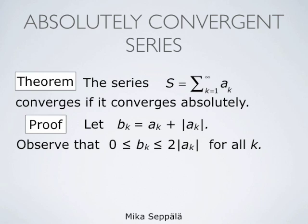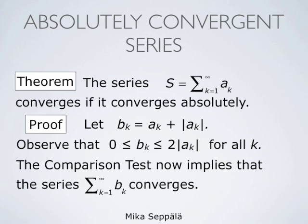We assume that the series s summation k from 1 to infinity of ak converges absolutely. This means that the series formed by the terms absolute value of ak converges in the normal sense. Therefore, the series formed by the terms 2 times the absolute value of ak also converges, and the comparison test implies that the series summation k from 1 to infinity of bk converges.